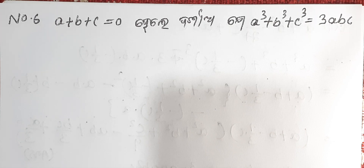Hello students, welcome back to my channel. Let's start the class. Question number 6: A plus B plus C is equal to 0. Prove that A cube plus B cube plus C cube is equal to 3ABC. Let's prove.